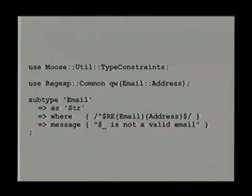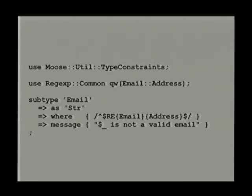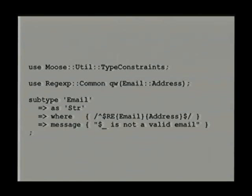This is really cool because you can say that a positive integer is an integer which is a number which is a thing — you can have type hierarchies. An email is a string, but a string which complies with a 'where' clause. Your where clause can be anything you want. Essentially, when you create this type, it puts my data into dollar-underscore, runs the code, and sees if it returns true. If not, it throws an exception with that error message. Regexp::Common gives us a special variable dollar-re which is a hash, and the email address plugin gives a regular expression that matches email addresses. Please don't write it yourself — everyone gets it wrong.